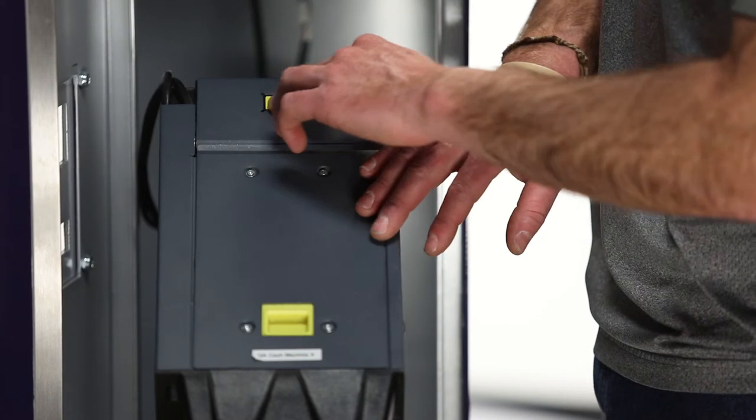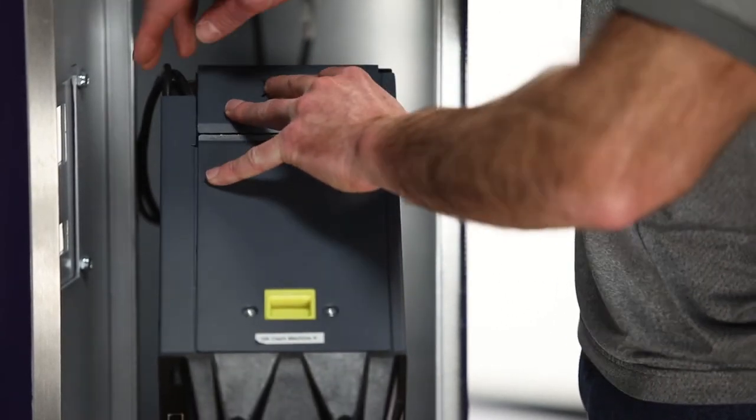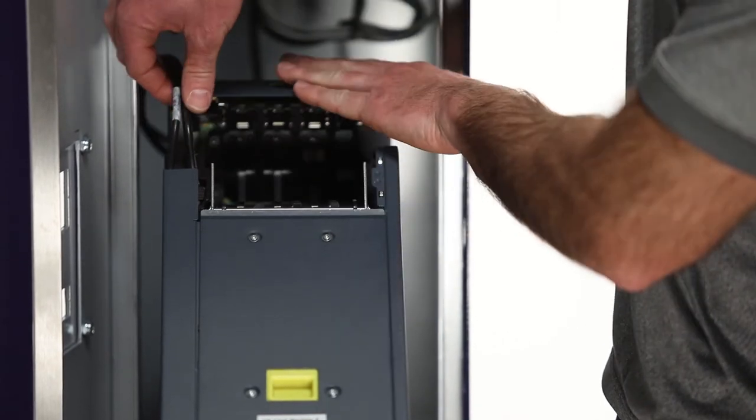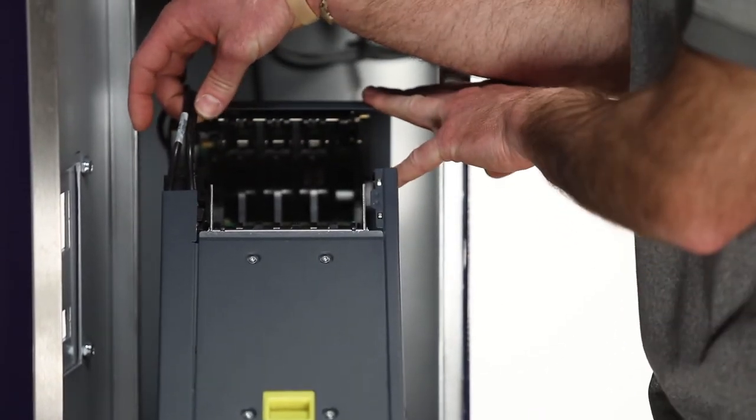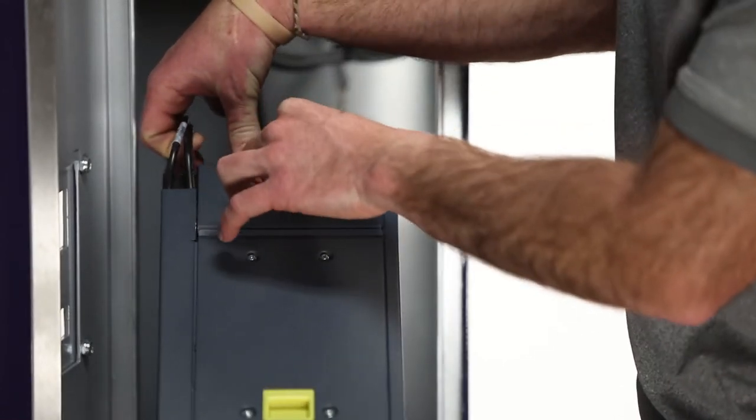The second area we'll look at is the recognition area where these two yellow buttons you can press to open this back panel, being careful to keep the wires out of the way. If you don't see any notes stuck in here, we can close it back up. Again, pushing the buttons to close it.